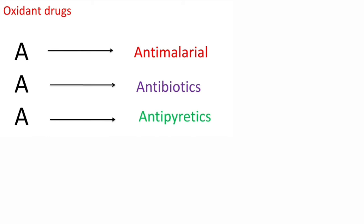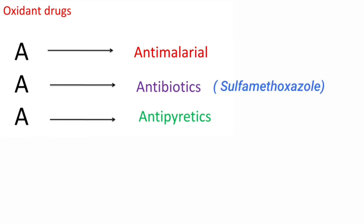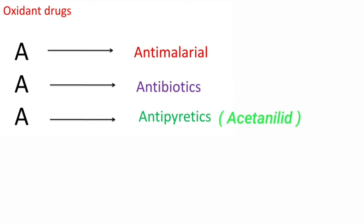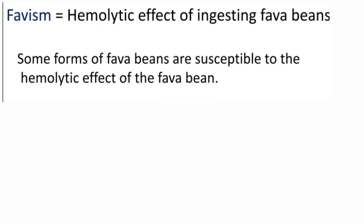The commonly used drugs that produce hemolytic anemia in G6PD deficiency patients are remembered by the mnemonic AAA: the first A is anti-malarials — the drug is primaquine; the second A is antibiotics — example, sulfamethoxazole; the third A is antipyretics — example, acetylsalicylate. If these anti-malarials, antibiotics, or antipyretics are given to a patient with this enzyme deficiency, it leads to oxidative stress responsible for hemolytic anemia.